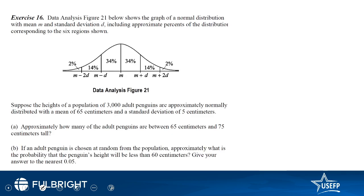The next question shows a graph of a normal distribution with mean M and standard deviation D, including approximate percent of distribution corresponding to six regions. A normal distribution has 50% of data above the mean and 50% below. The breakdown is: 34% within one standard deviation on each side, 14% between one and two standard deviations, and 2% beyond two standard deviations. So 68% of data is within plus or minus one standard deviation.